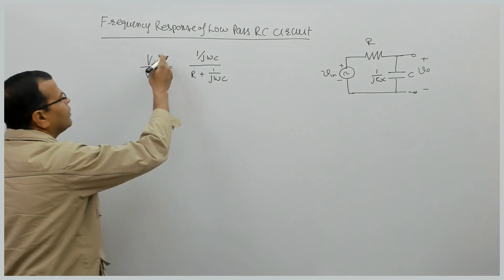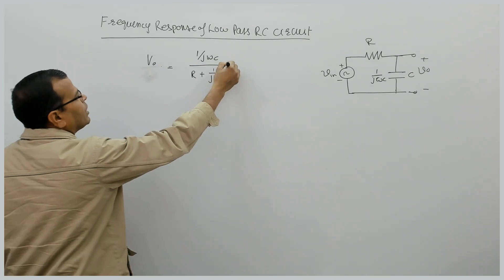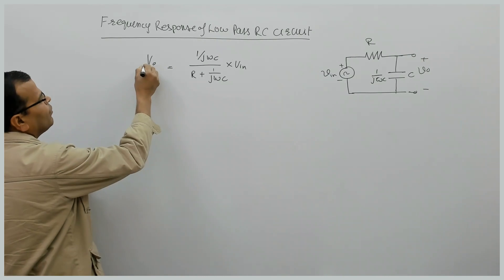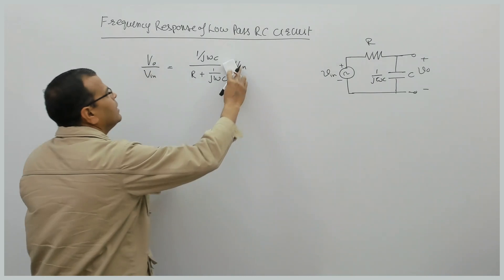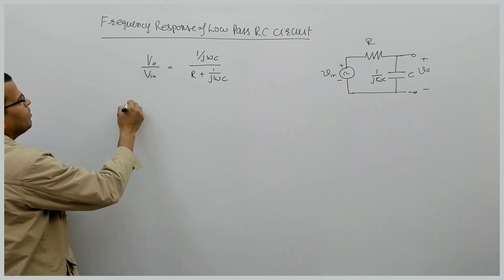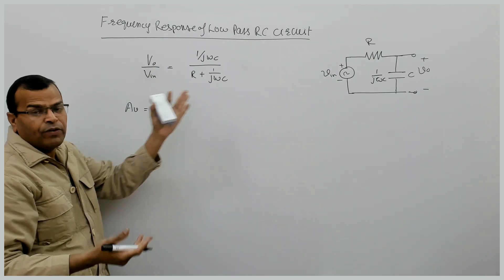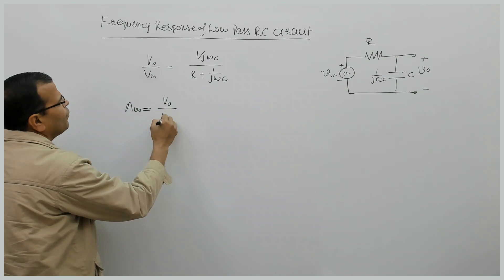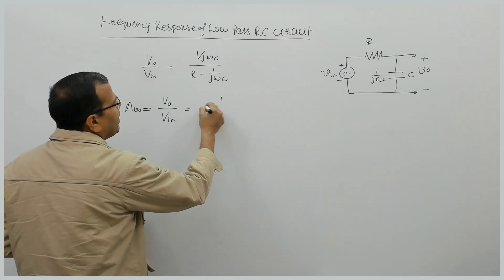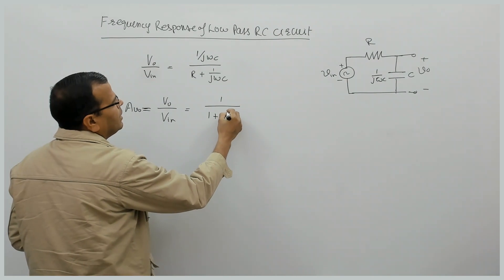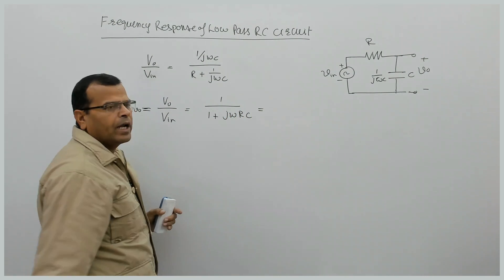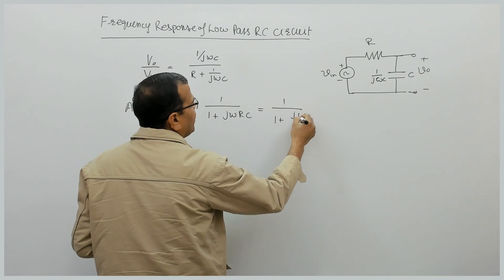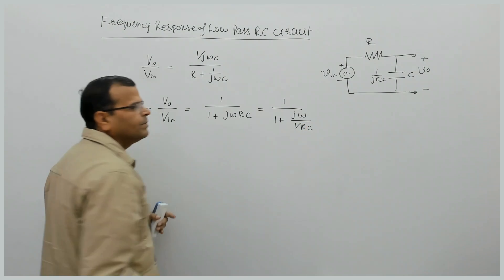The output voltage of this circuit is the reactance of the capacitor branch divided by the sum of the two impedances, multiplied by the input. Taking the ratio of output to input voltage, we denote this voltage transfer ratio as AV₀ = V₀/Vᵢₙ, which equals 1/(1 + jωRC).